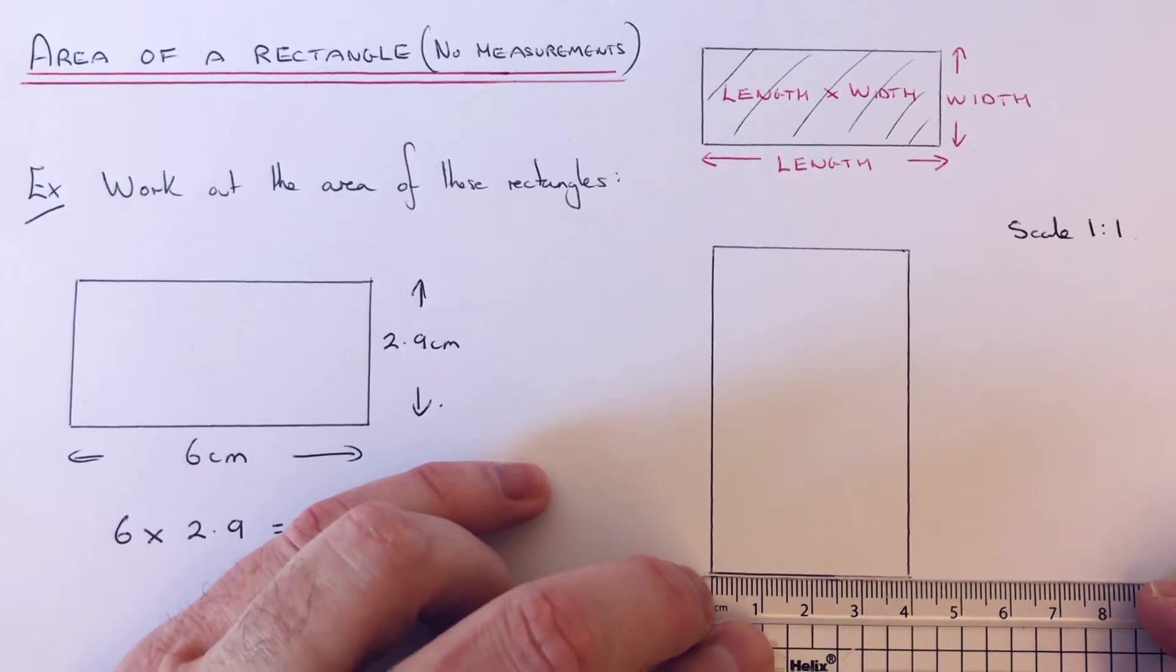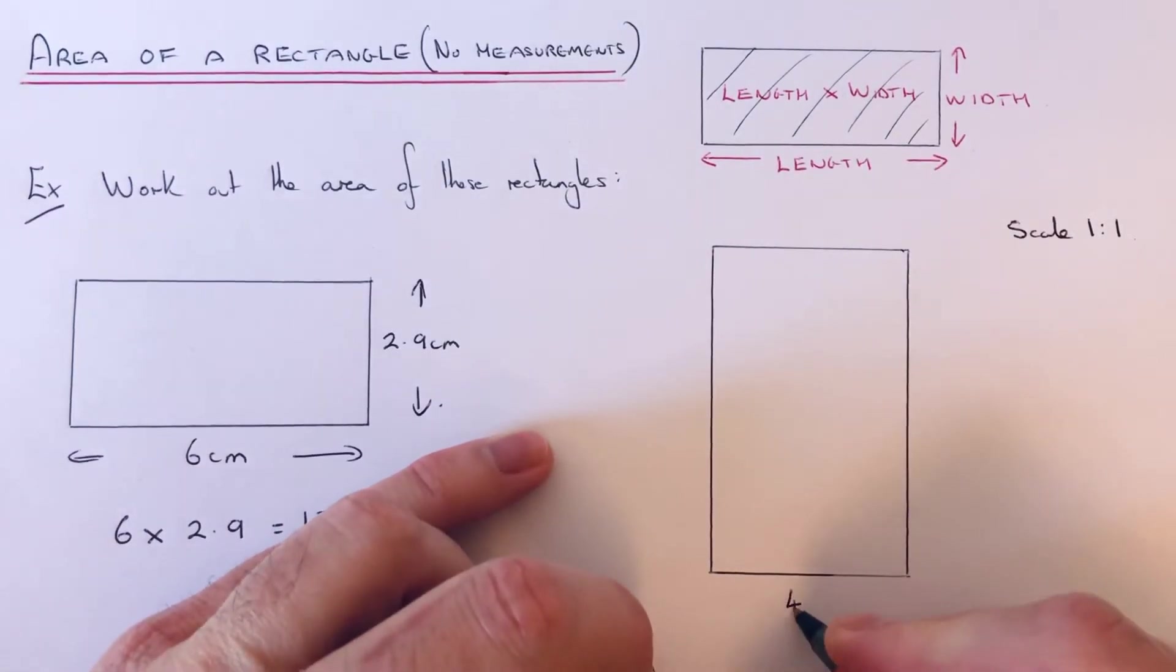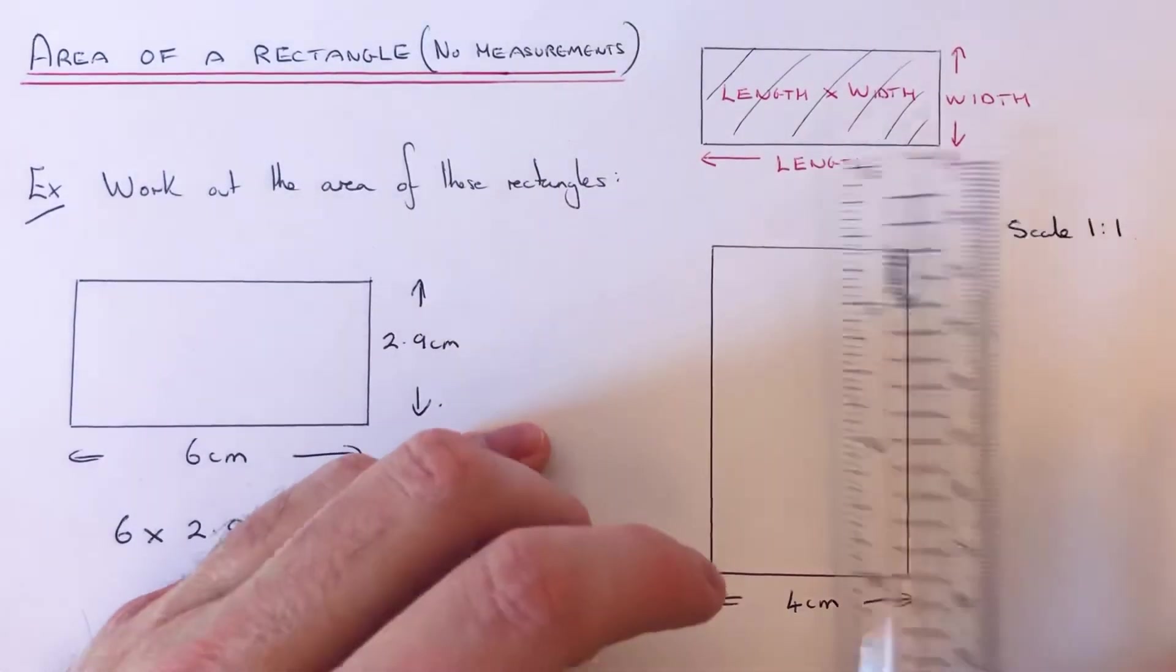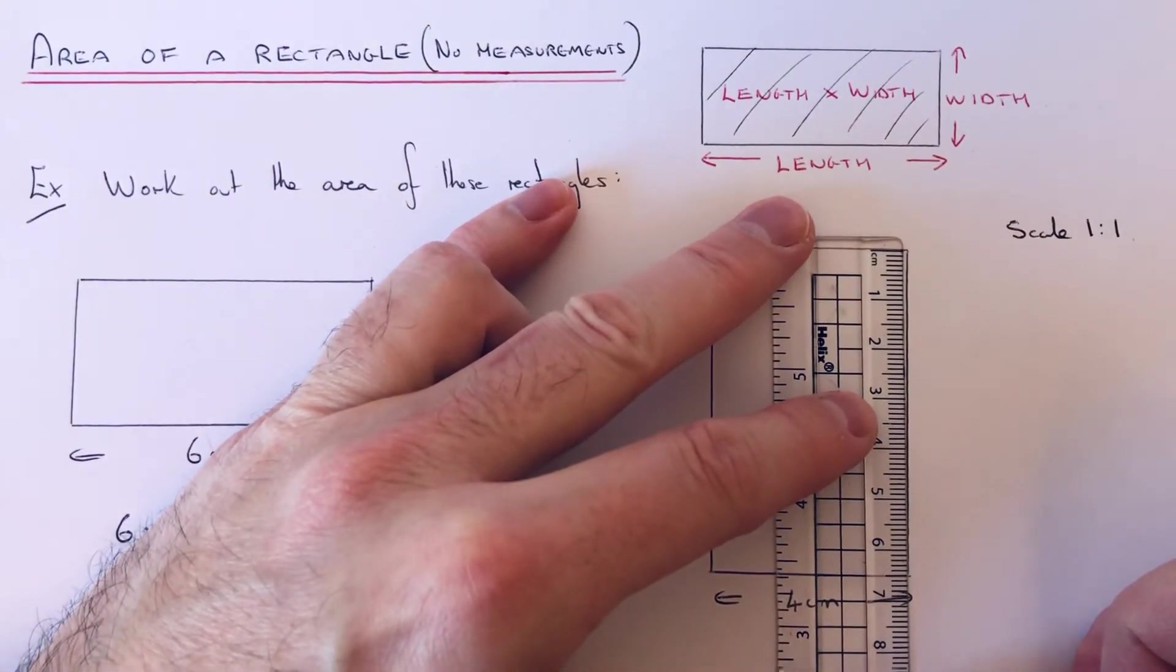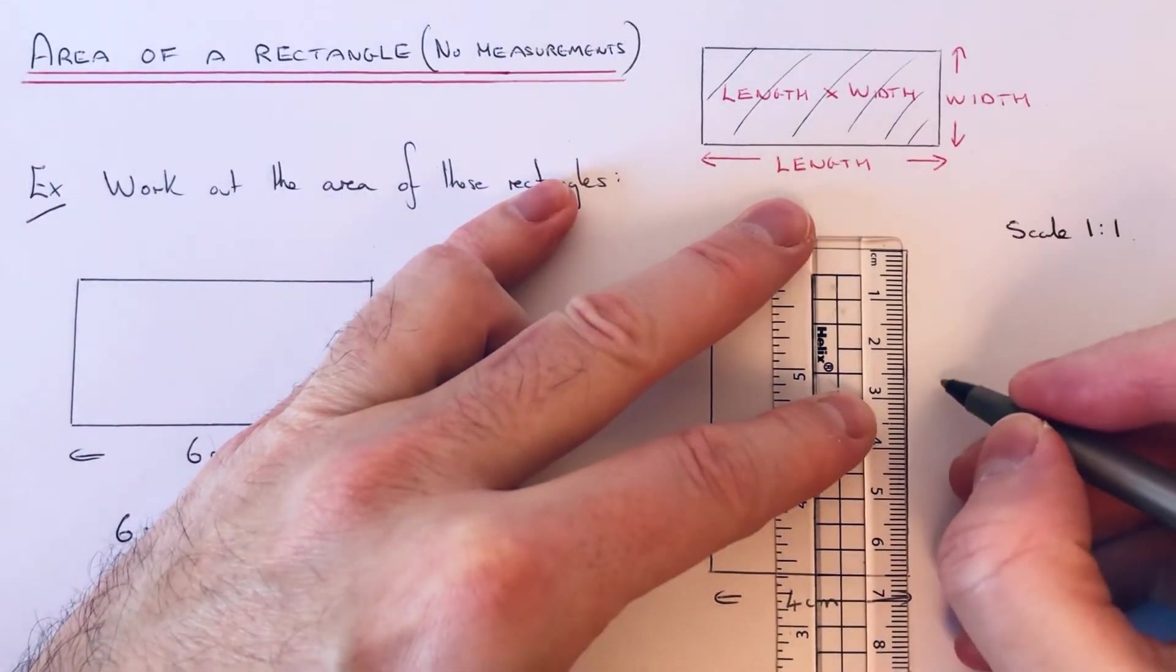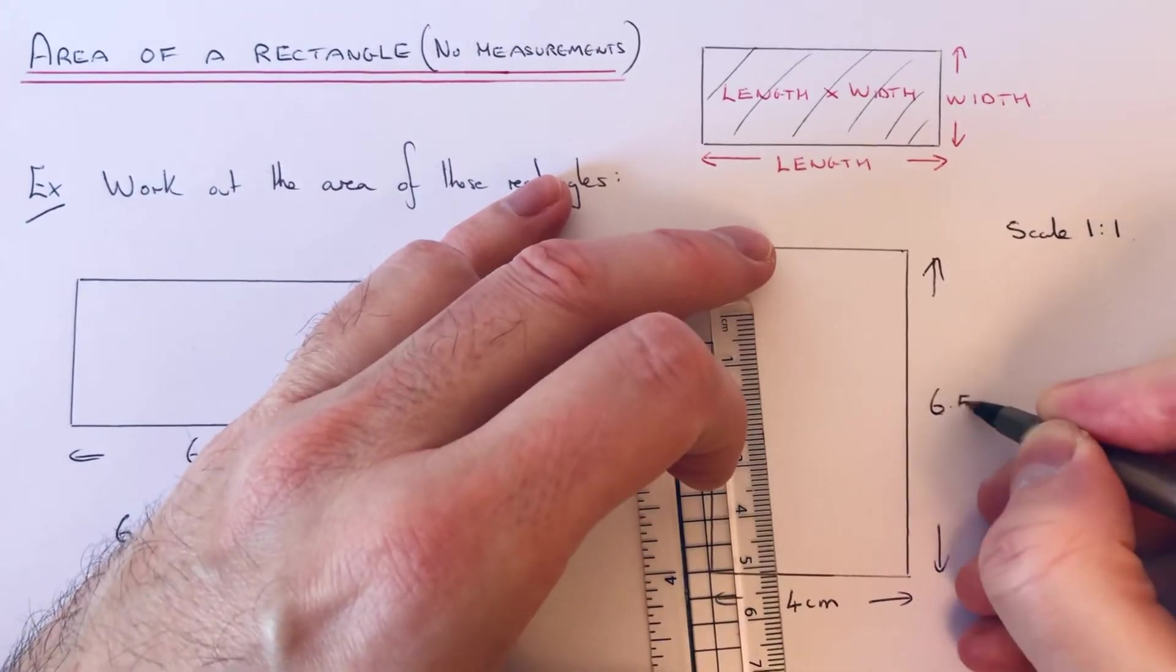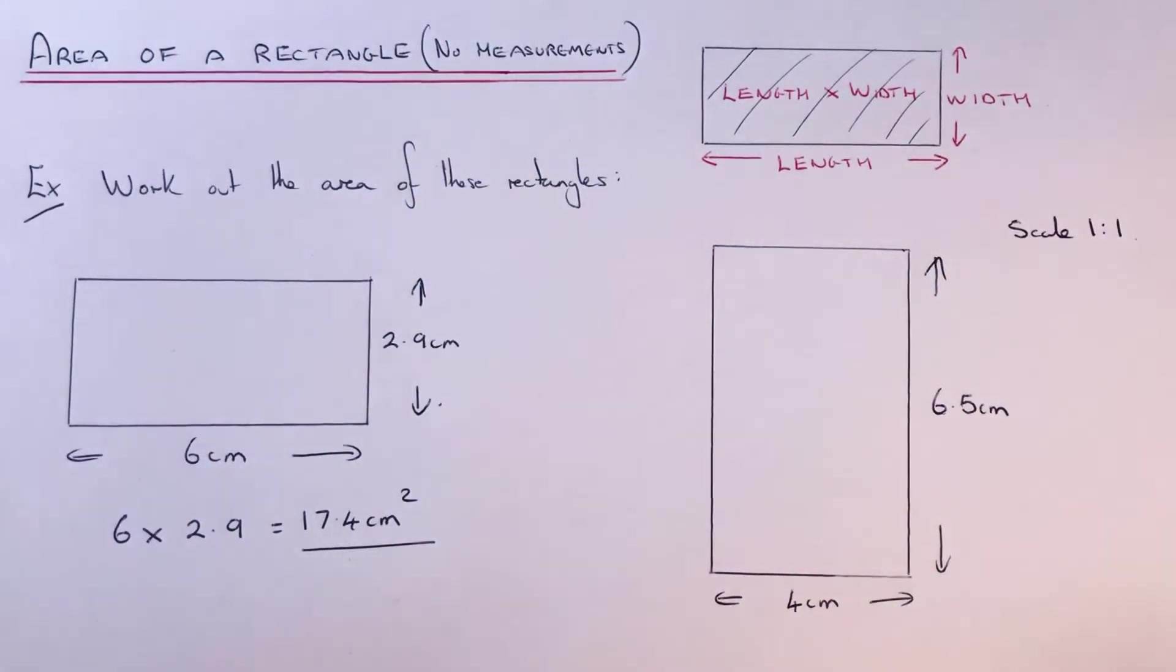So again, we need to measure the length and the width. Let's start with the width first of all, so the width of this rectangle is 4 centimeters, and then the length of the rectangle is looking like 6.5 centimeters.